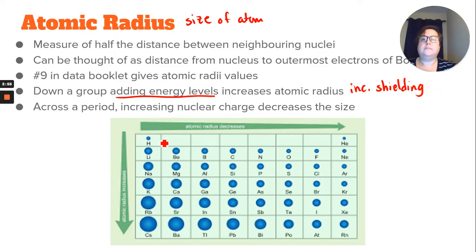As we go across the period, we can see that it's getting smaller, and the reason it's getting smaller is because you're increasing the effective nuclear charge, and so you have more protons pulling on those electrons. There's no additional shielding, so that attraction just keeps getting larger and larger, and it's pulling those electrons towards the nucleus easier.